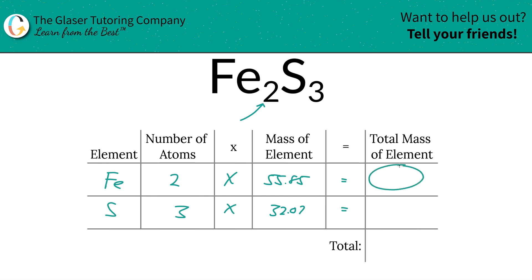And then to find the total mass of that element in the compound, we're simply going to multiply this row across. So for iron here, it's going to be a total of 111.70.